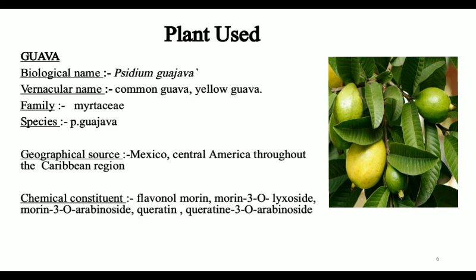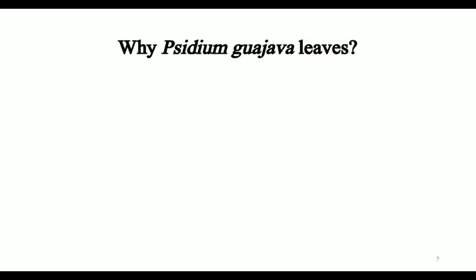The chemical constituents of Guajava include flavonoids, morin, morin-3O-glucosides, morin-3O-arabinosides, quercetin, and quercitrin, among others. We are using Psidium guajava because it contains bioactive compounds, particularly flavonoids and polyphenols, which are believed to contribute to its anti-hypertensive effect. Some researchers suggest that guava leaves may exhibit ACE inhibitory activity.